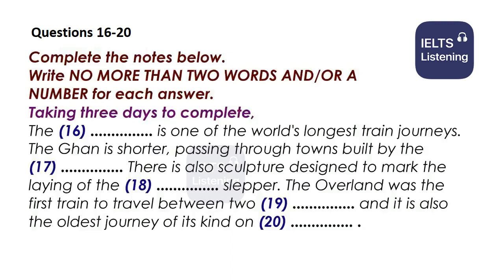Passengers can stretch their legs at stops such as Kalgoorlie, famous for gold, and Broken Hill, first founded as a silver mine. If three days on board seems excessive, there are alternatives. The Ghan travels from Adelaide in the south to Alice Springs in the centre of the continent, taking 20 hours and passing through Crystal Brook, Port Augusta, and Woomera. This journey gives an indication of what life was like for the earlier settlers as they discovered the country.